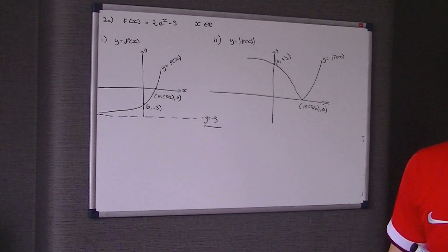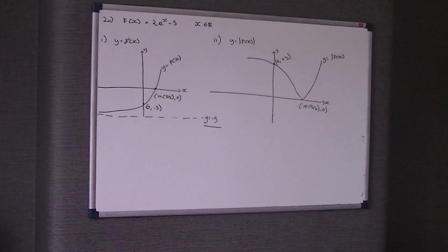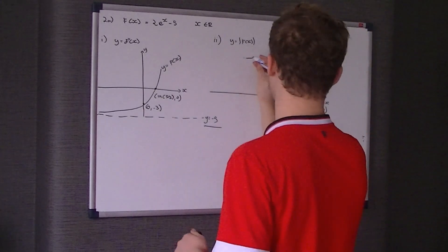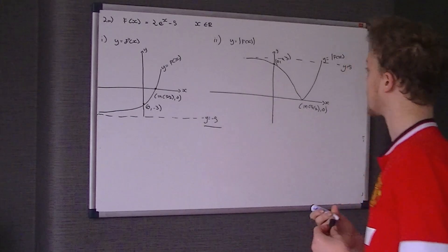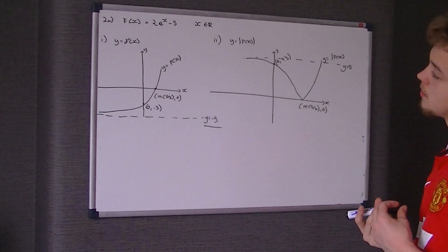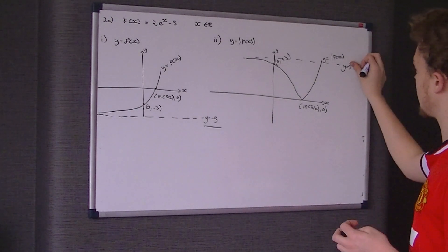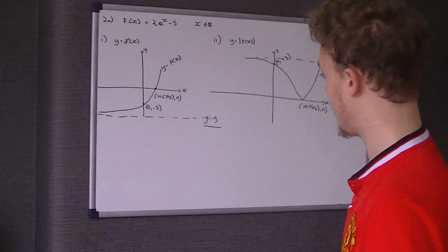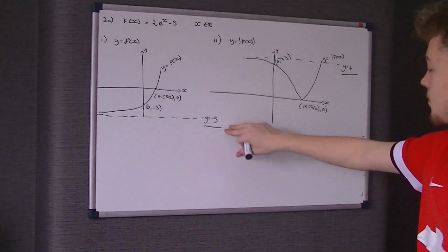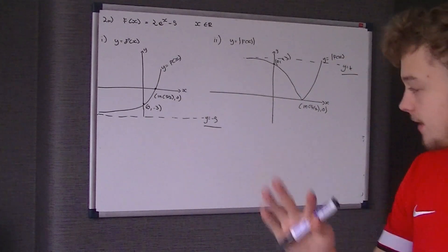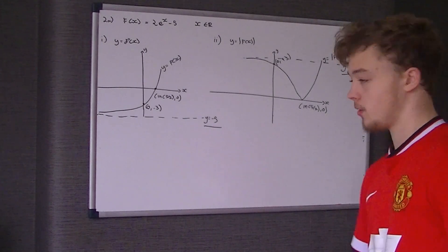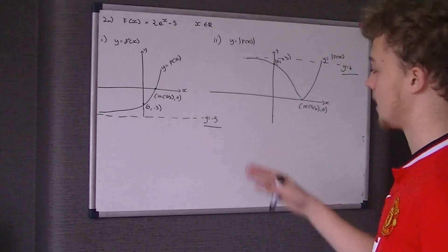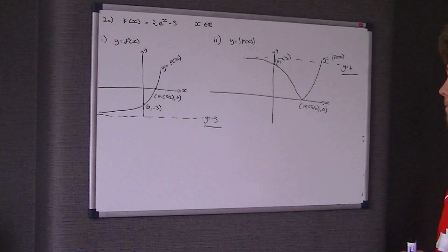We still need to draw the asymptote for the modulus graph. The asymptote is at y = 5. Personally, I think the asymptotes should be y = -4 and y = 4 rather than y = ±5, but the mark scheme says y = -5 for part 1. I don't see where they've got that from, so that's up to you what to believe, as this is not an officially endorsed resource.